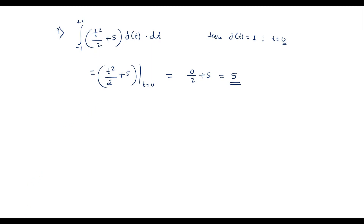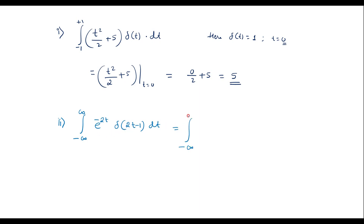Now let me consider the second numerical: the integration from −∞ to +∞ of e^(−2t)·δ(2t − 1)dt. This can also be represented by taking the 2 out of the bracket inside the delta as δ(2(t − 1/2)), which is the same expression.